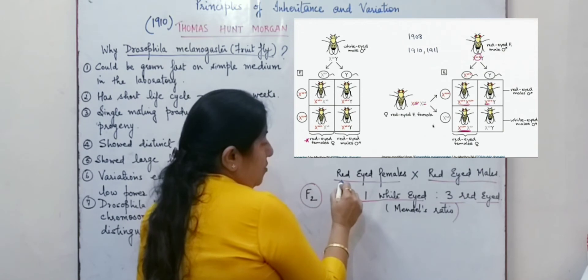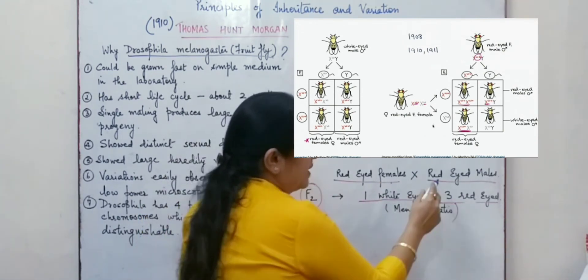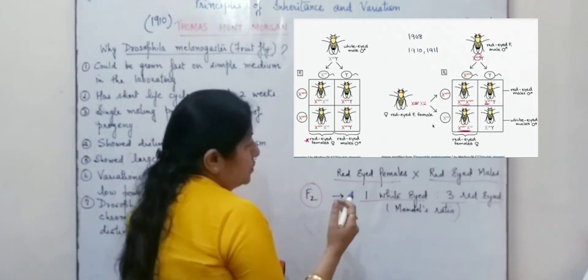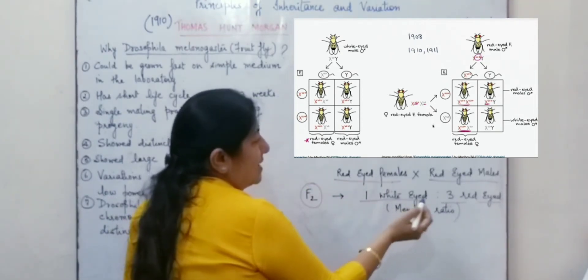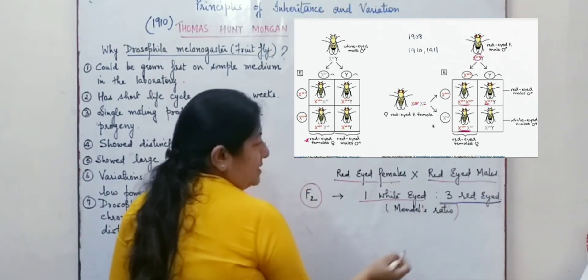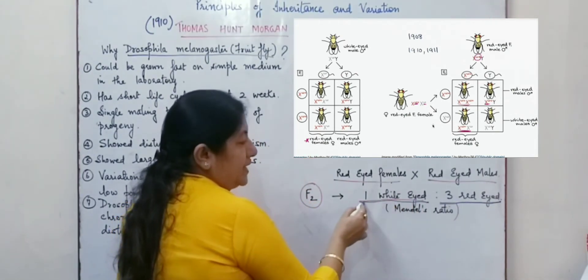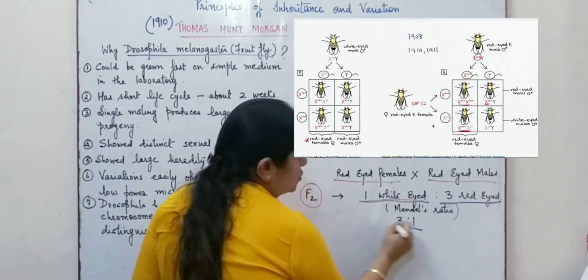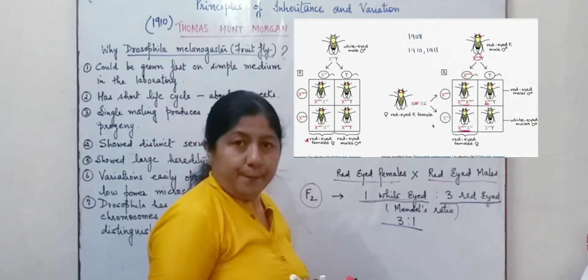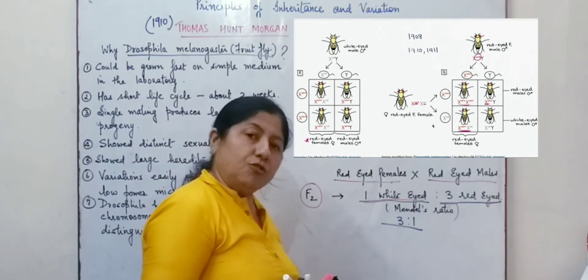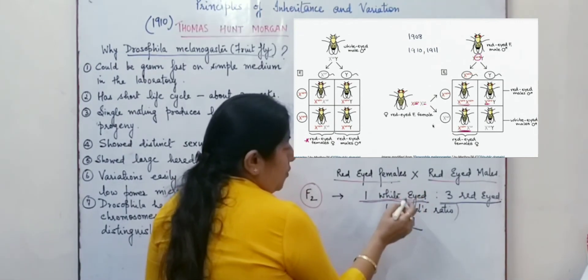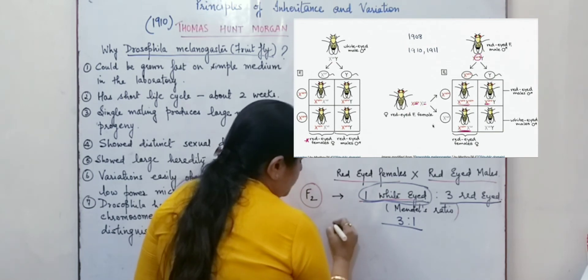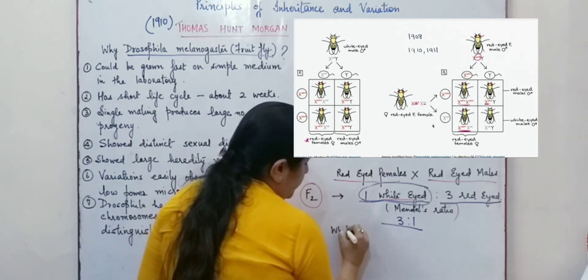Later on to study further, he crossed red eyed female with a red eyed male and the progeny which was obtained was 3 red eyed and 1 white eyed fly. So the ratio was similar, that is 3 to 1, which was proposed by Mendel. But he also found that out of all the white eyed flies which were obtained, most of the white eyed were males.